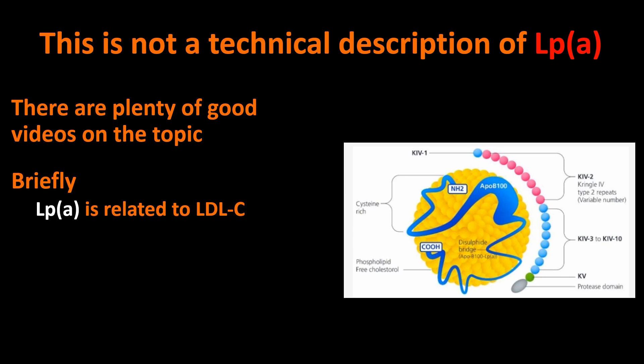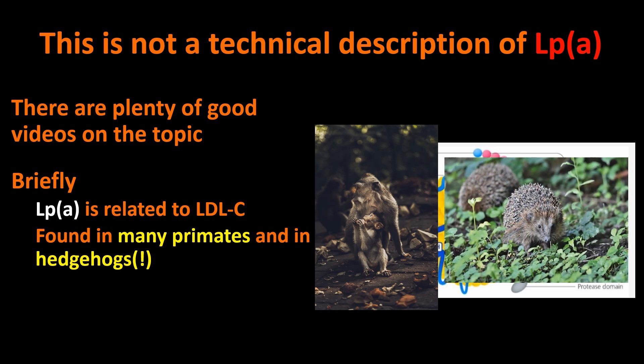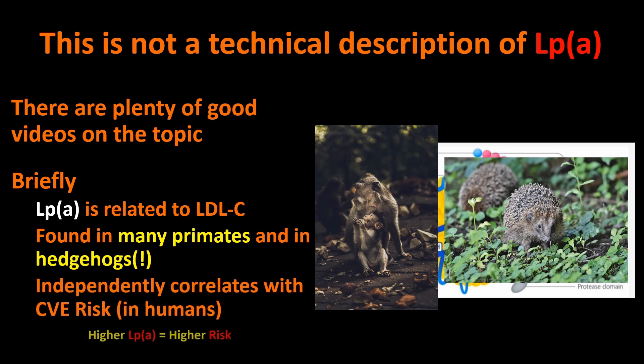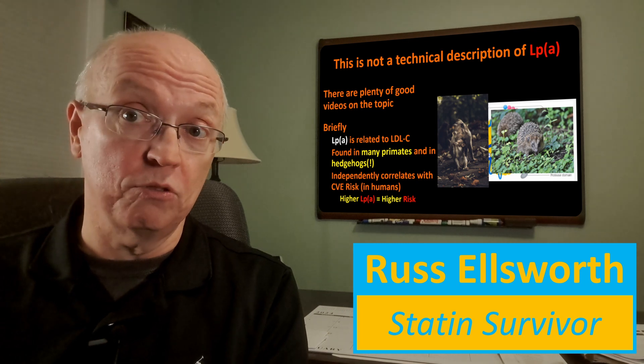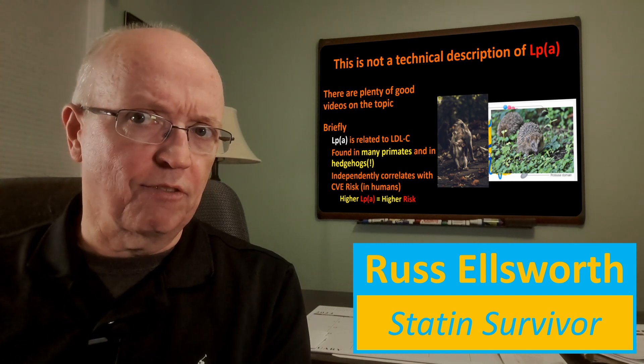Briefly, it's related to LDL-C. It's generally included in the LDL-C value, though you can get a separate test to measure it directly. It's found in many primates and, of all things, in hedgehogs. I saw this so many times I was convinced it must be an urban legend, but there are plenty of scientific papers on LP little a being in hedgehogs and primates and no other mammals — which baffles me because that means somebody actually went out and measured LP little a values in a whole bunch of mammals and couldn't find it anywhere except hedgehogs.